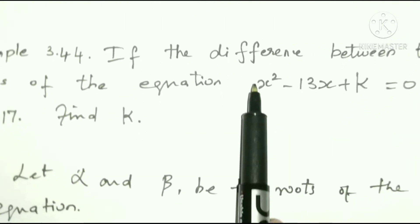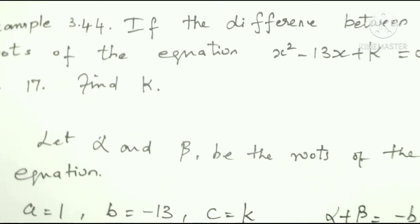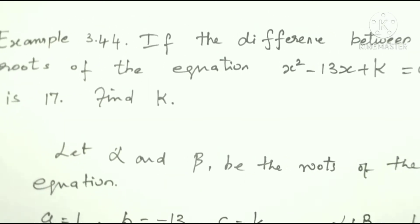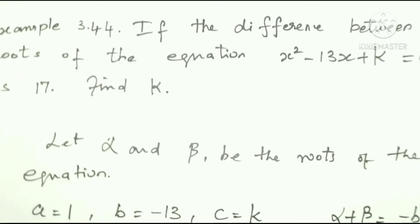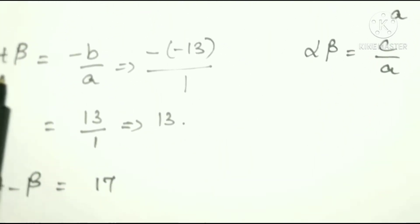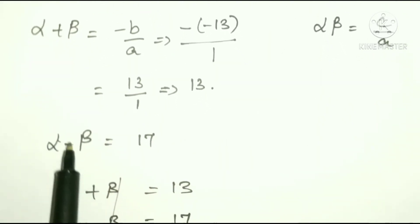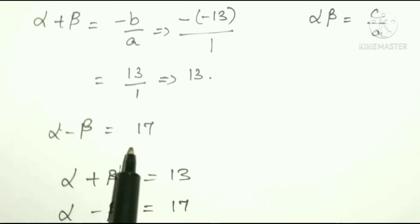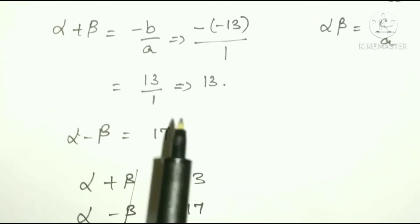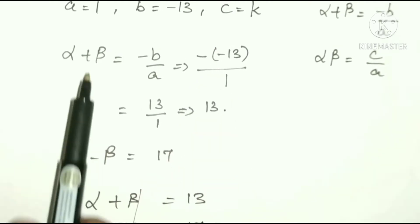The difference between the roots means subtraction, so alpha minus beta equals 17. This is the second equation we will use alongside the sum of roots.